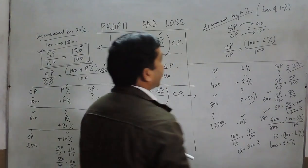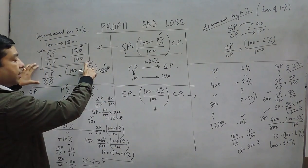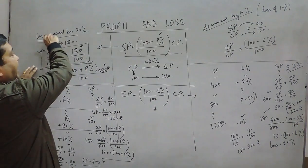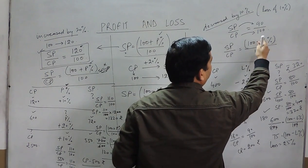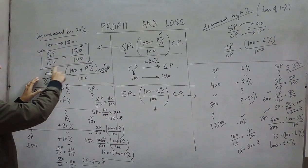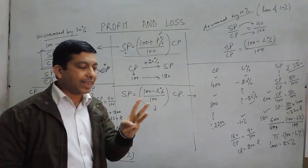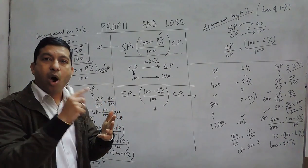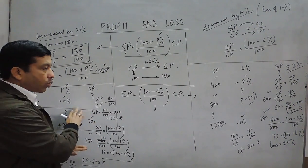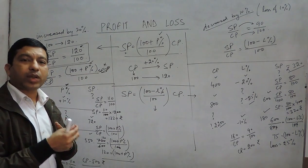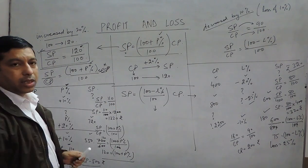In a nutshell, these two formulas — SP / CP = (100 + P%) / 100 for profit, and SP / CP = (100 − L%) / 100 for loss — are derived from the logic that when something increases, the ratio is 100 + P, and when it decreases, it is 100 − L. In every question, two of the three values (selling price, cost price, profit/loss percent) are given, and we calculate the third by applying the appropriate formula.